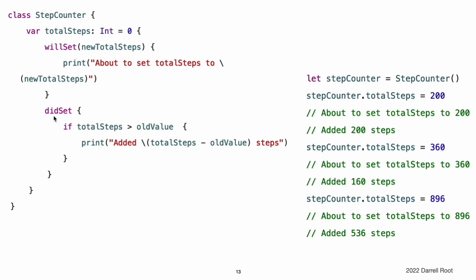The didSet observer is called after the value of totalSteps is updated. It compares the new value of totalSteps against the old value. If the total number of steps has increased, a message is printed to indicate how many new steps have been taken. The didSet observer does not provide a custom parameter name for the old value, and the default name of oldValue is used instead.